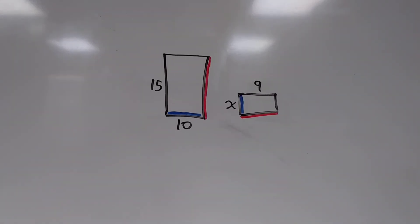So here, we can see that the side of length 10 corresponds to the side that we don't know, the X. On the larger rectangle, the 15 unit side corresponds with the 9 unit side. So this means we're matching up the short ends with the short ends, and the long sides with the long sides.